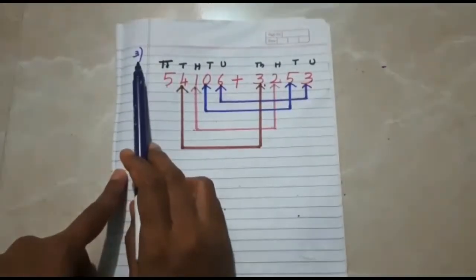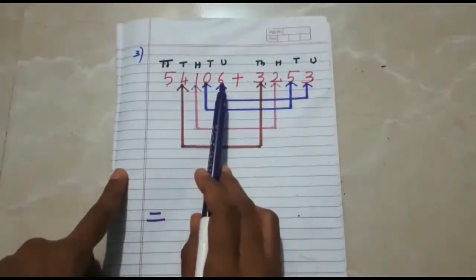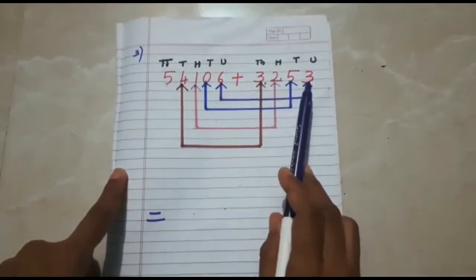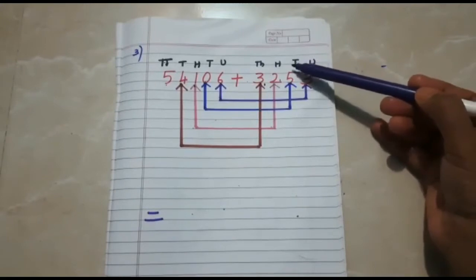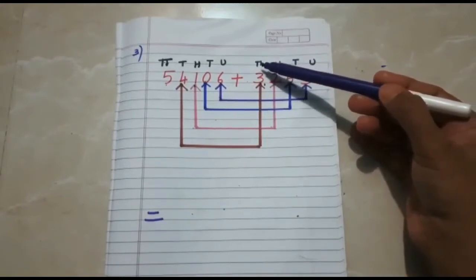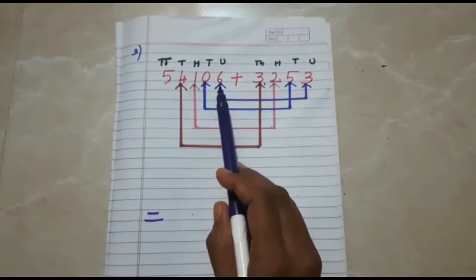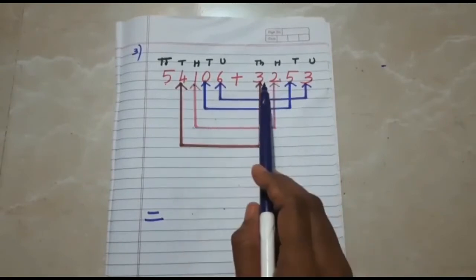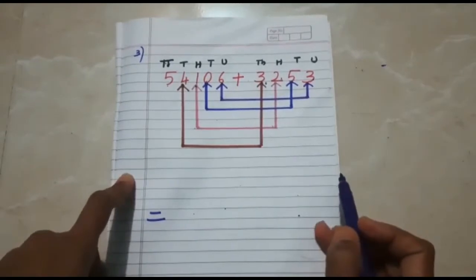The third question of horizontal addition is 54,106 plus 3,253. As usual, we have to write the respective place value of the digits, then pair up — units with units, tens with tens, hundreds with hundreds, and thousands with thousands. Let us start the addition using the horizontal method.